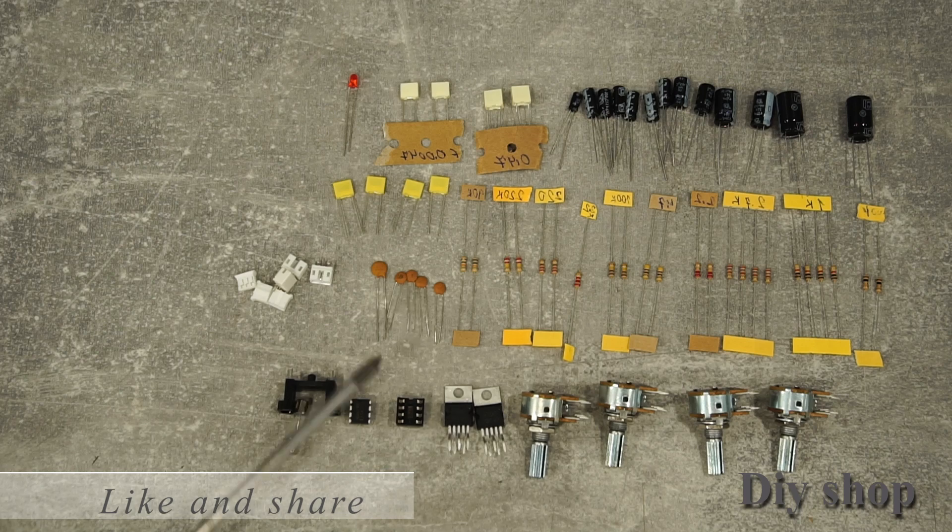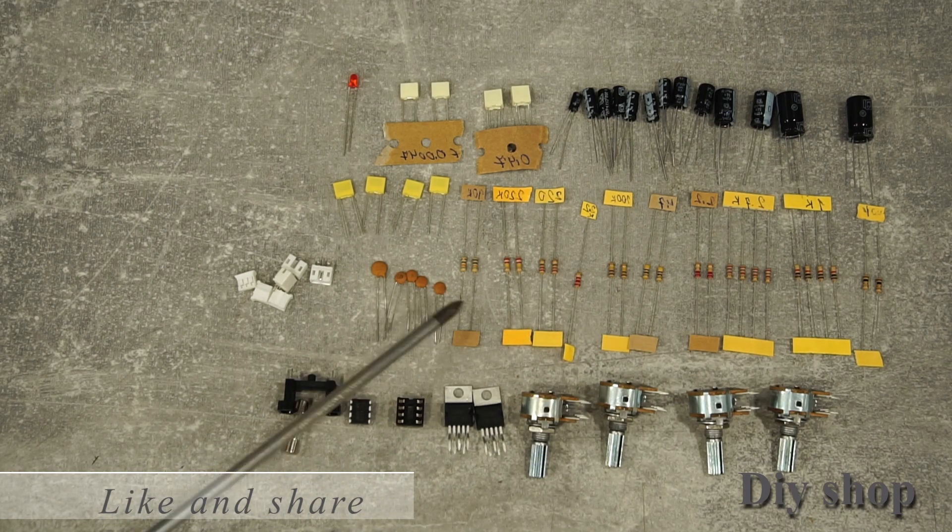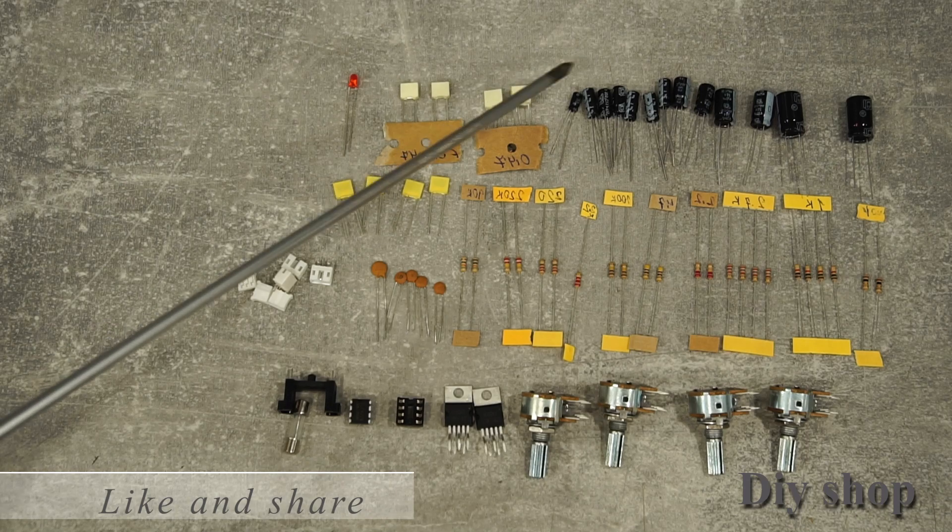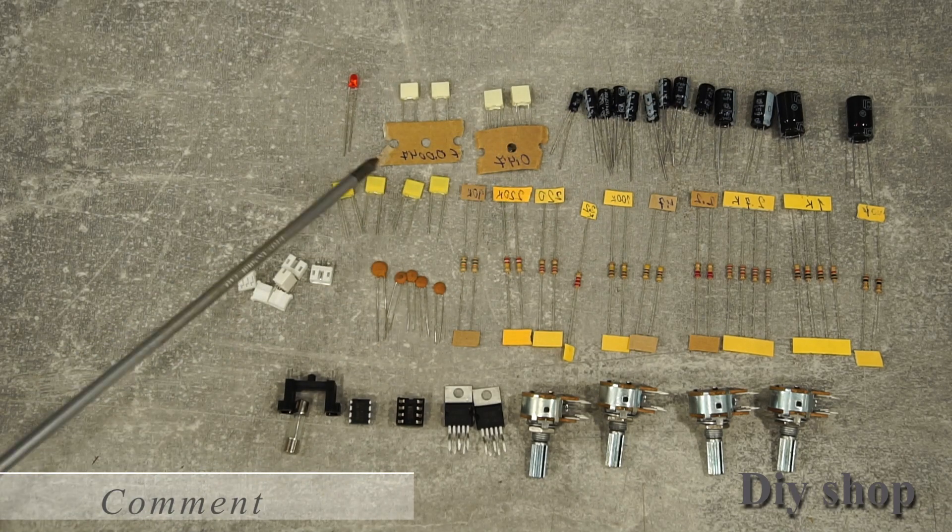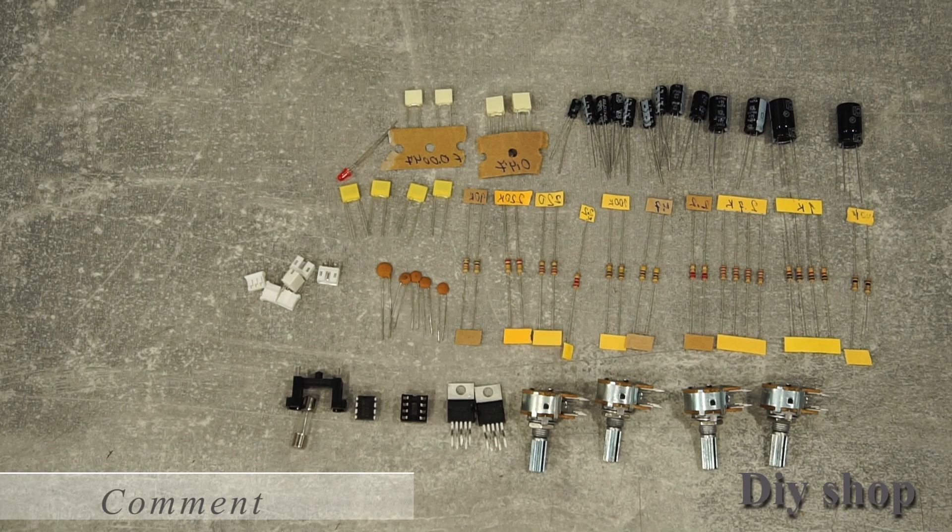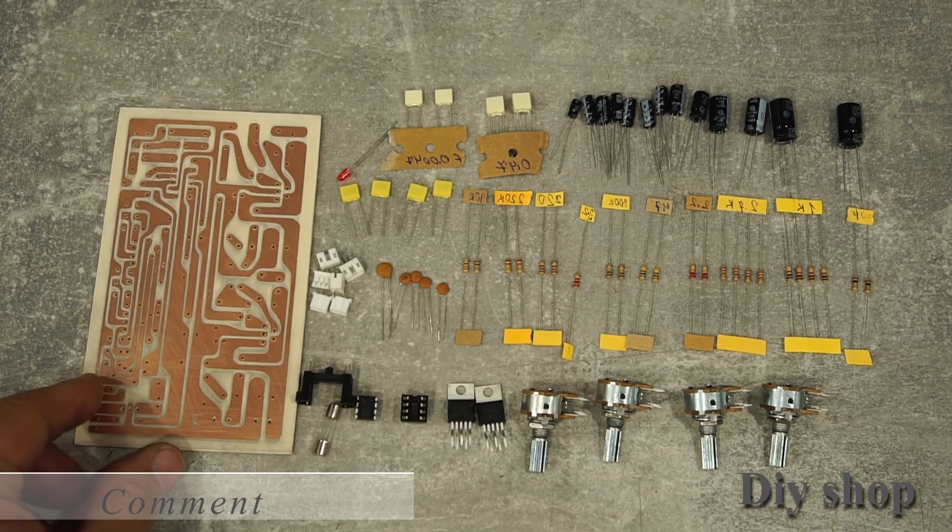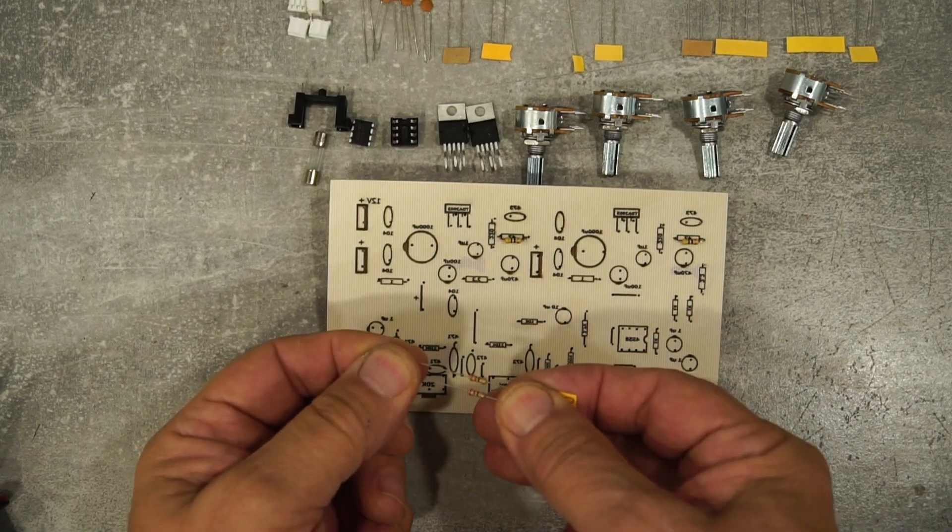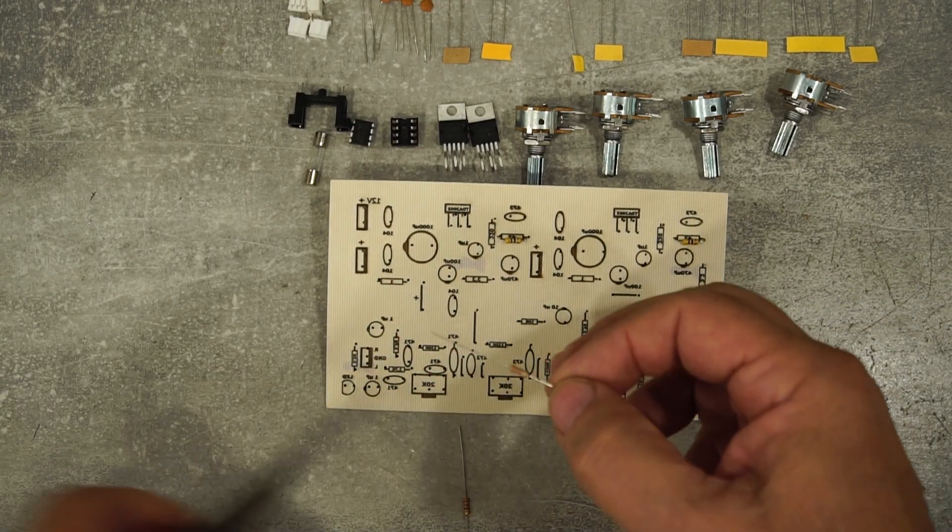These are the necessary parts: four potentiometers, TDA2003 and C4558 integrated circuits, ceramic capacitors, resistors, electrolytic capacitors, polyester capacitors, and an LED, a PCB printed circuit board onto which I will solder all the components. A list of the required parts can be found in the description of the clip.